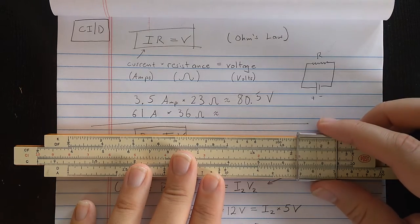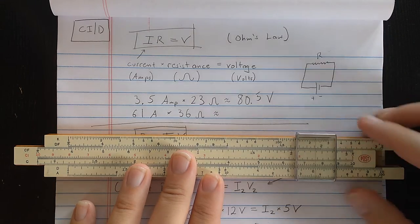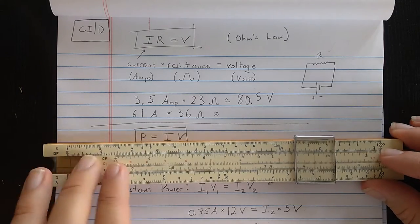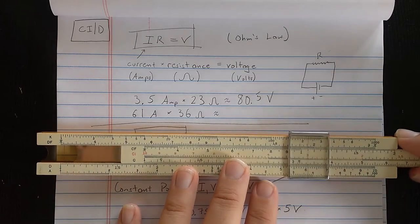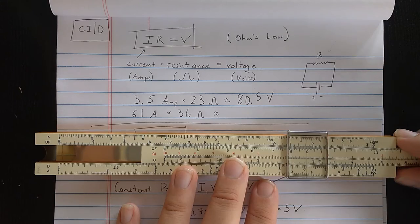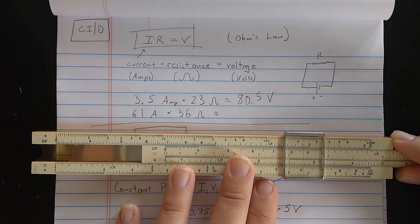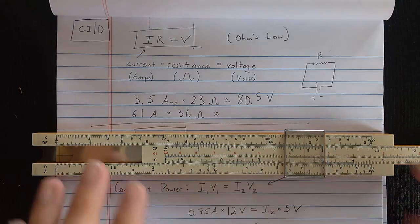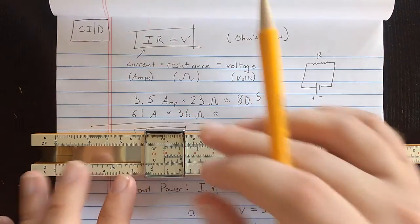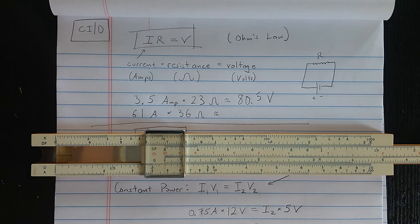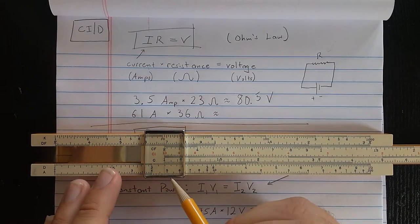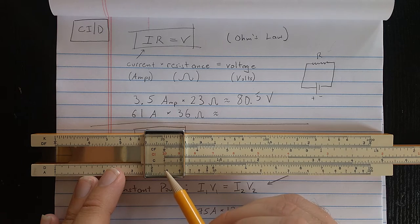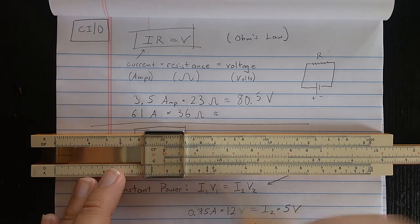Let's do another example. If I have 61 amps, so I'll find the 6.1 times a 36 ohm resistance. There's 35, 36 on the CI scale there. Then, I'll come out to the index, and I see voltage drop should be, that looks like 2, not quite 2.2, so I'm going to put that at 219.